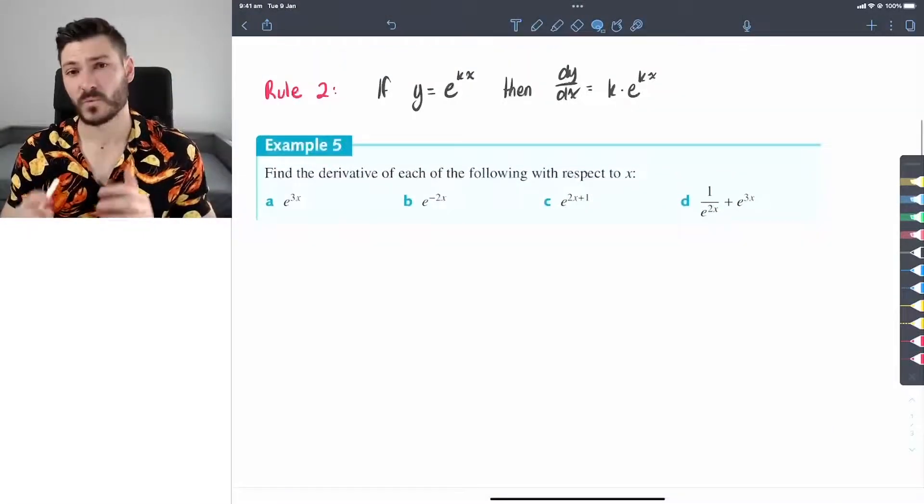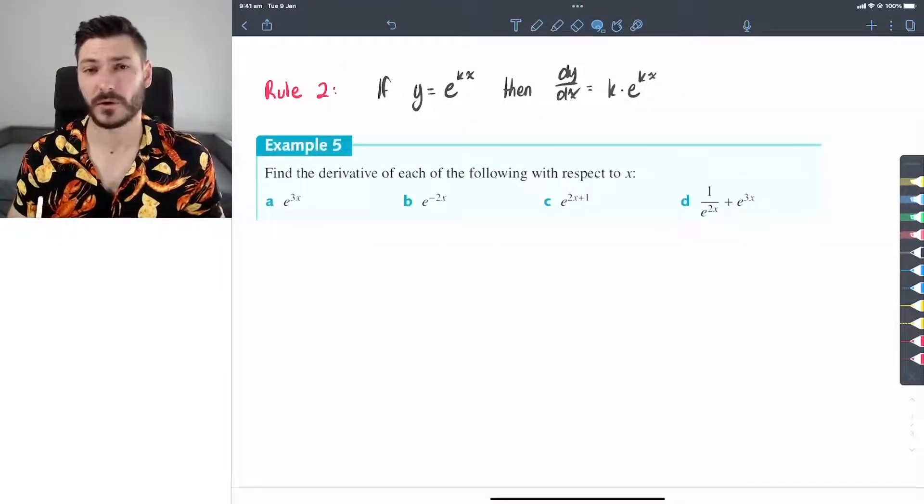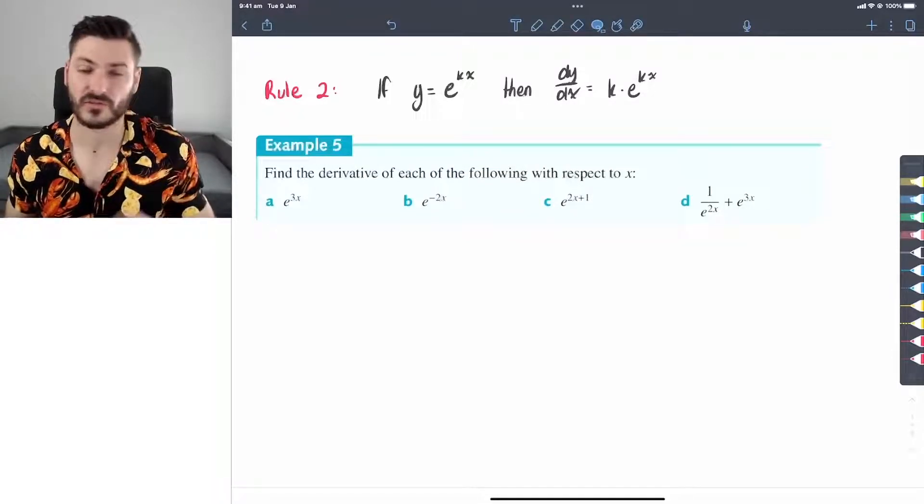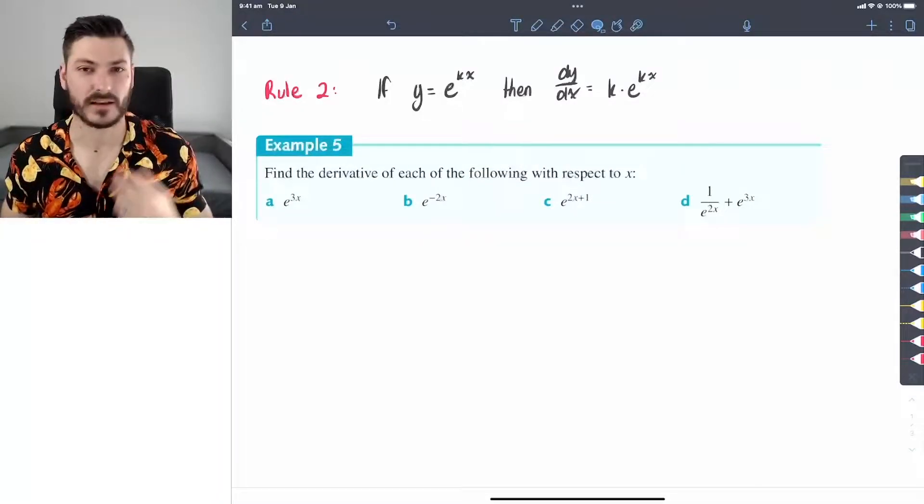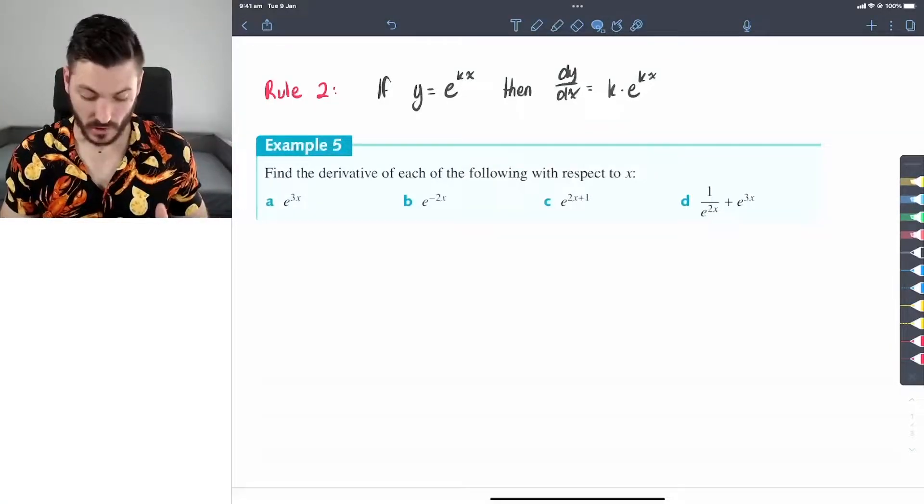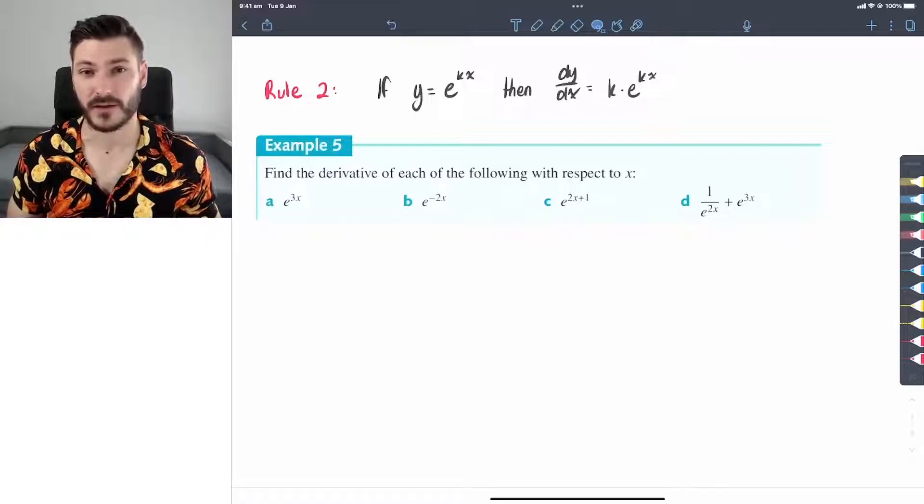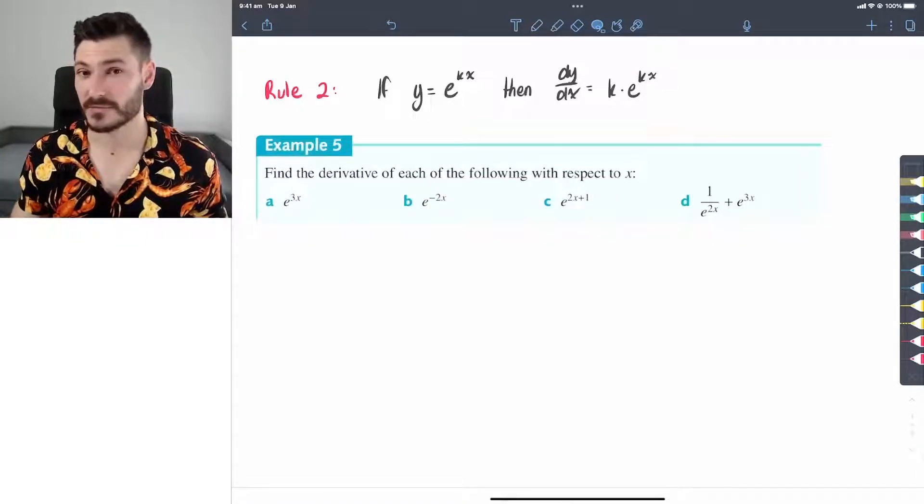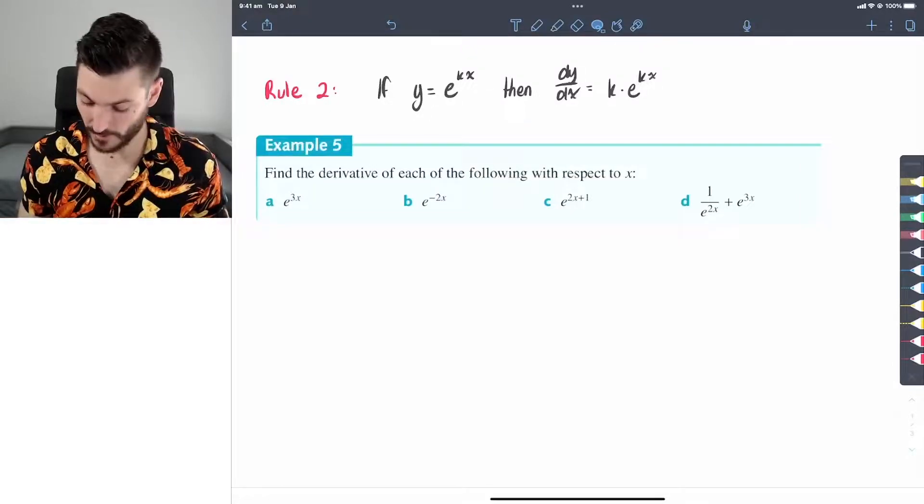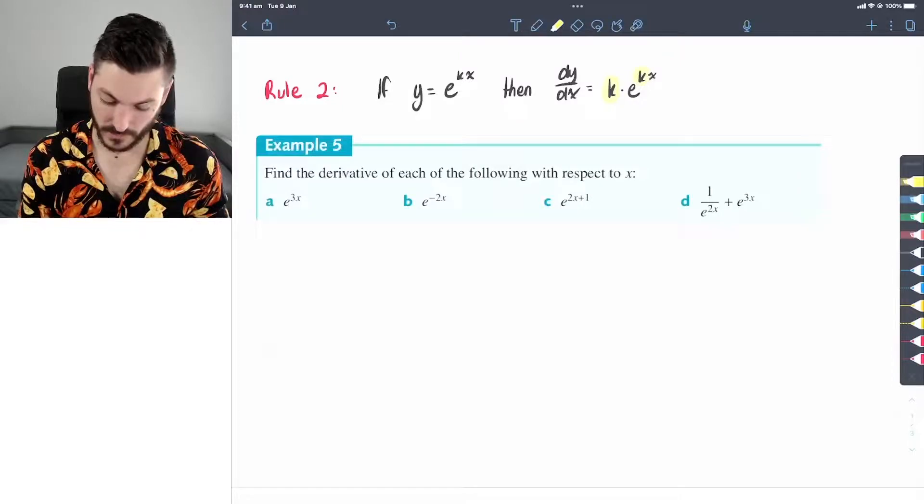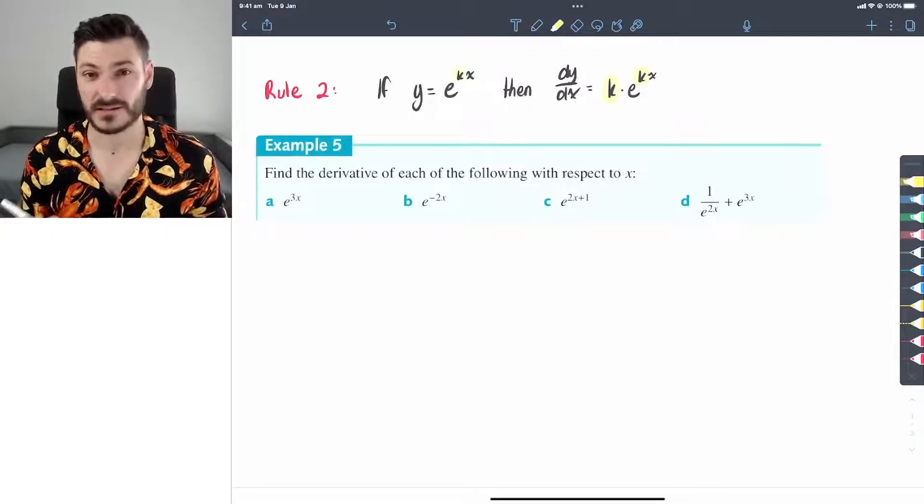Moving on to rule two, slightly more complexity. If we now have e to the power of some k, some constant k of x, so 2x, 3x minus 5x, whatever. This is the rule: if y equals e to the power of kx, the derivative of y with respect to x is k times e to the power of kx. I'm going to annotate this one in yellow. So this k value up the top, all of these k values are going to be the same.